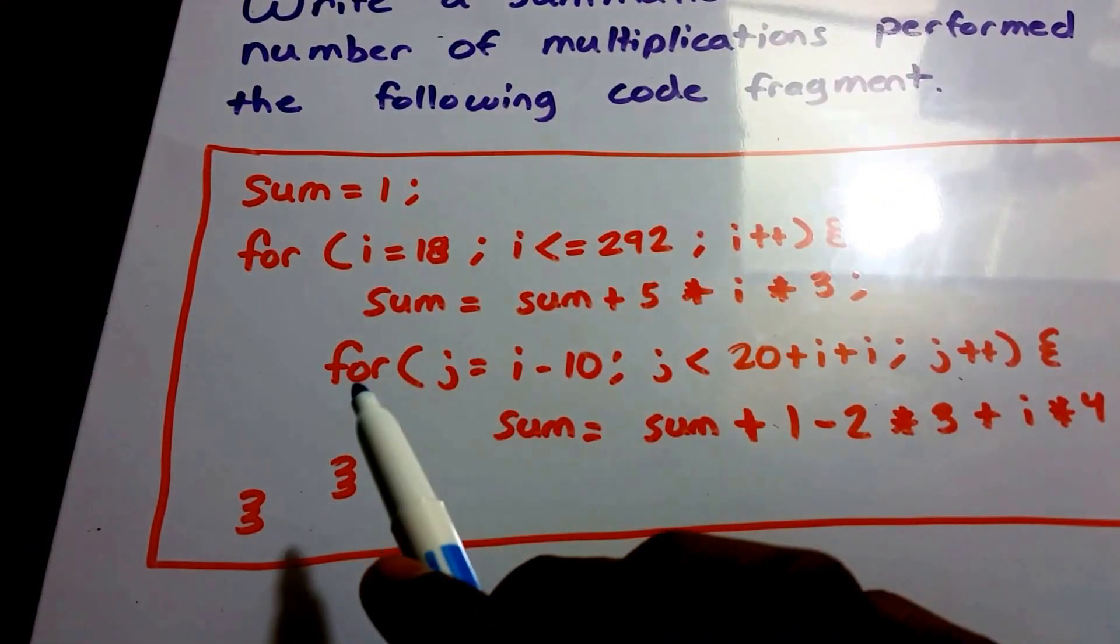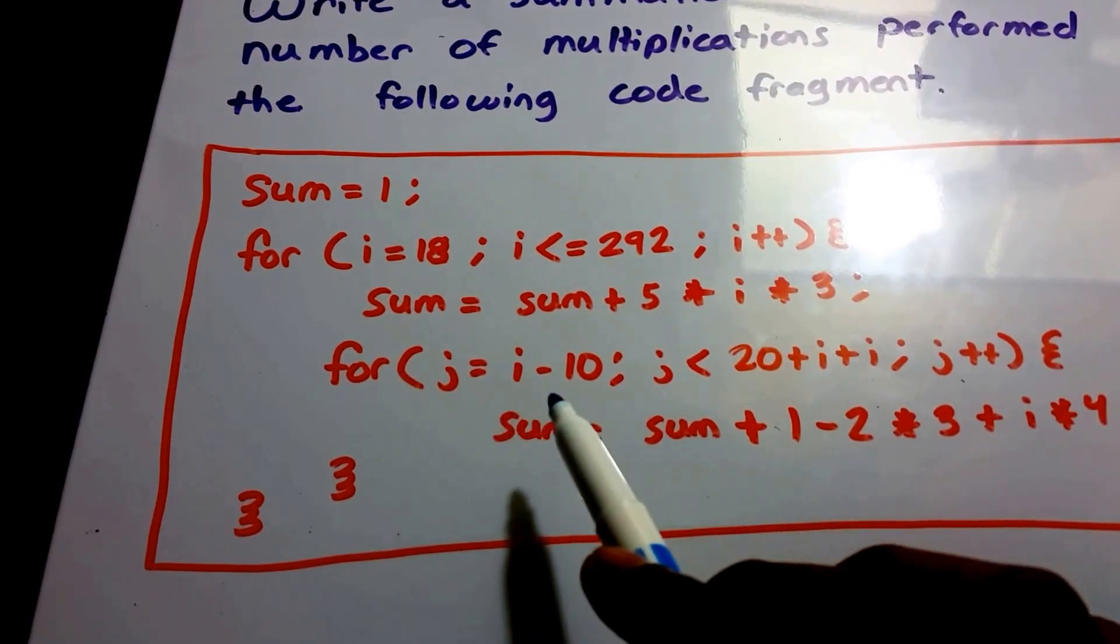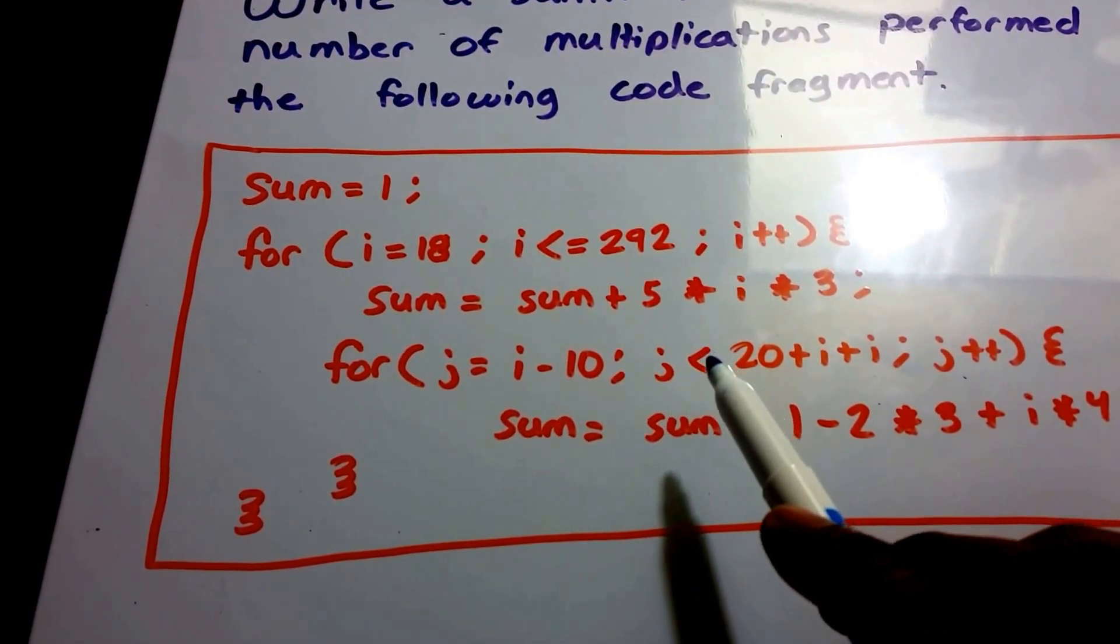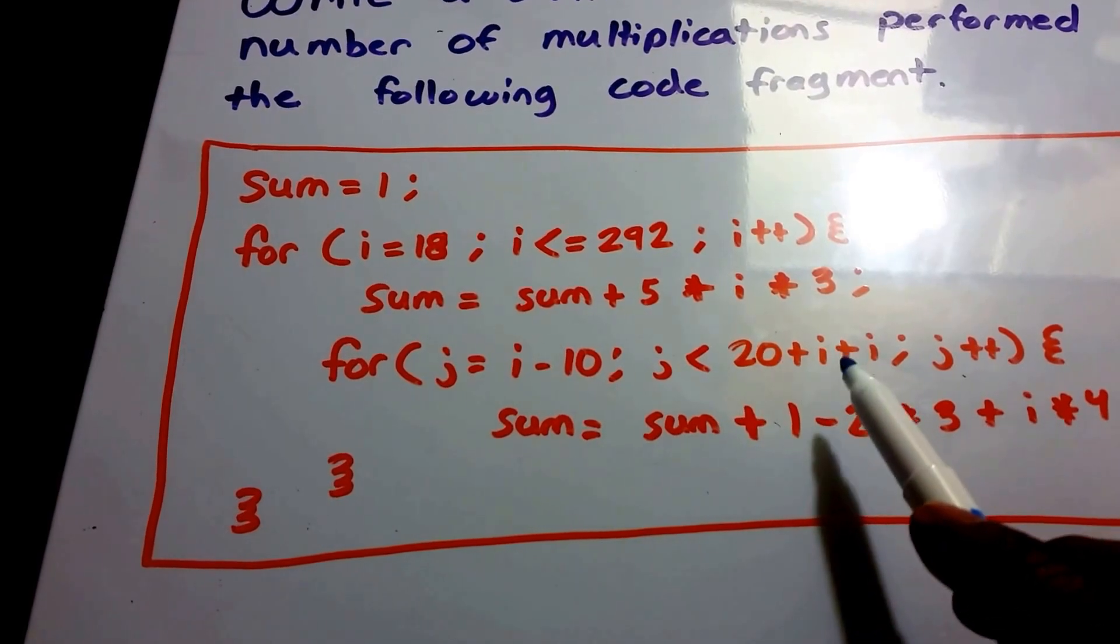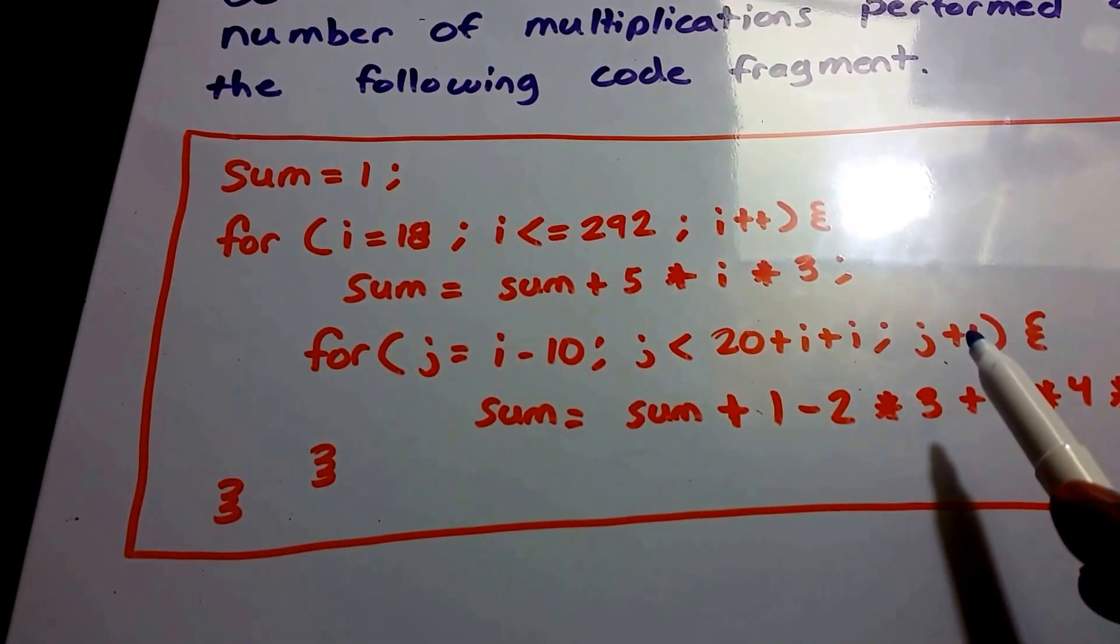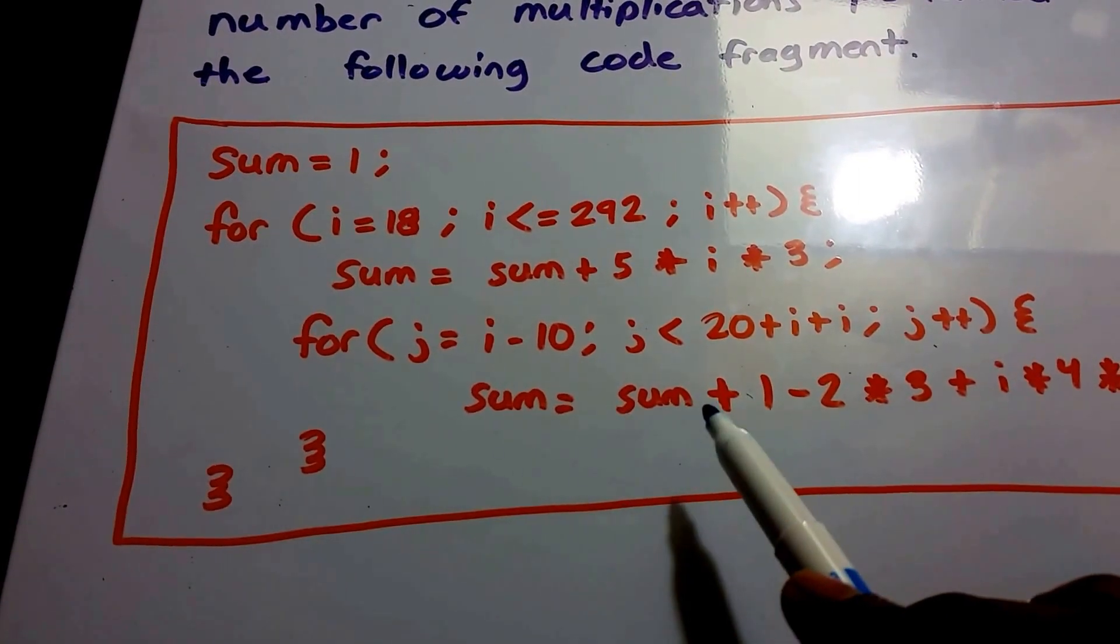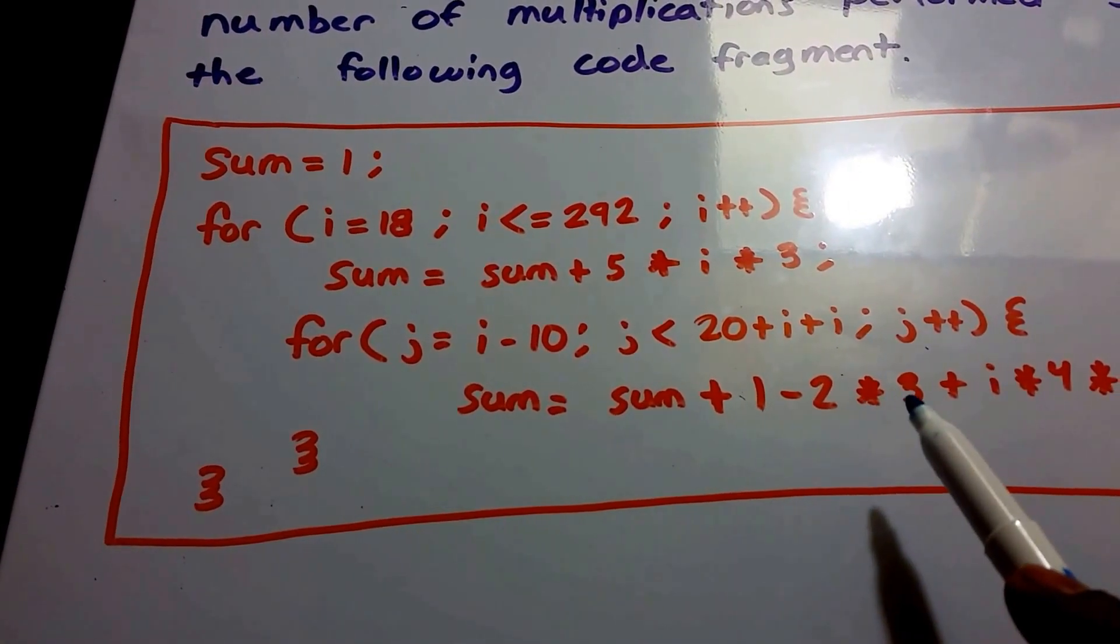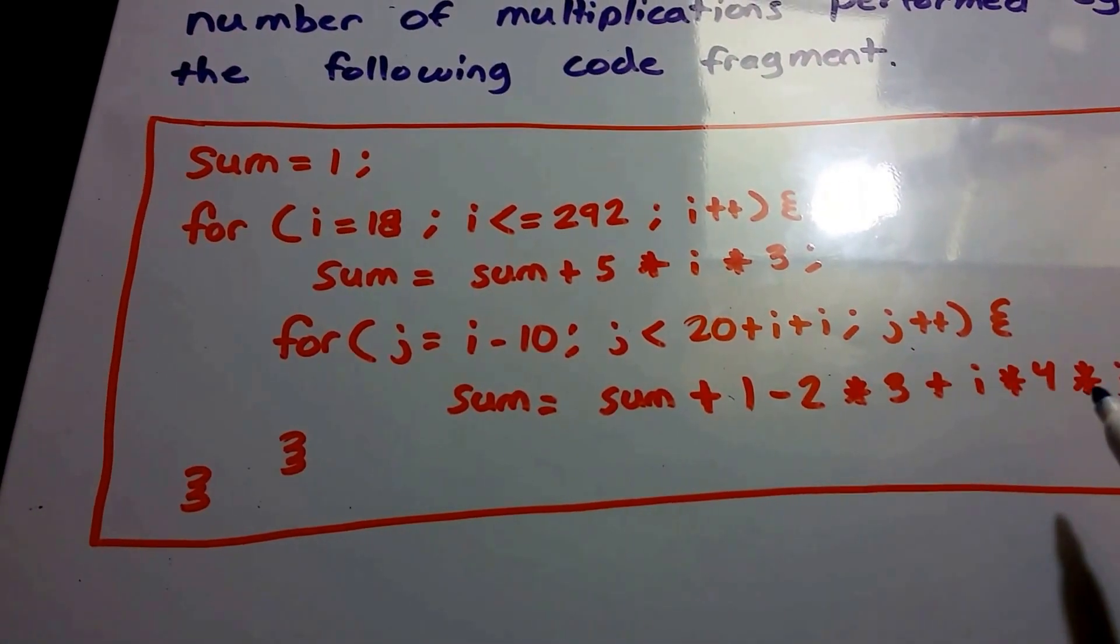And then we have our second for loop, and it runs from j equals i minus 10, and it runs while j is less than 20 plus i plus i, and then j increments by 1 each time, and then sum equals sum plus 1 minus 2 times 3 plus i times 4 times j.